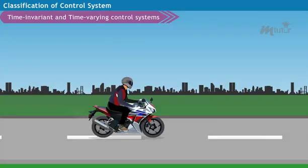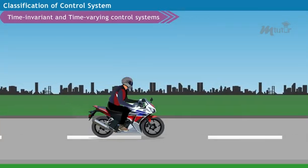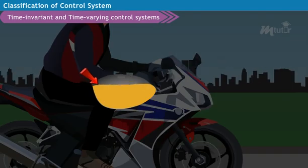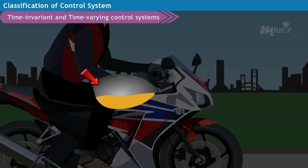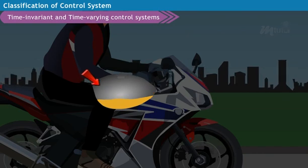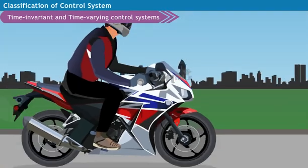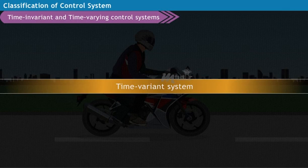But in the case of vehicles, its mass reduces with respect to time based on the fuel consumption during the ride. Hence, it is called the time-variant system.